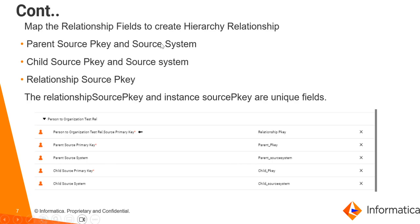To create a relationship, we would need a parent source primary key and source system record details, and a child source primary key and child source system detail, and a relationship source primary key. The relationship source primary key should be unique across the hierarchy. We will see how to map all these fields in the demo.